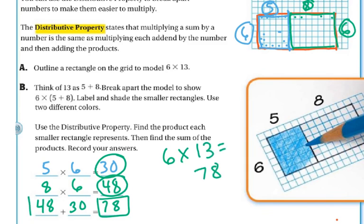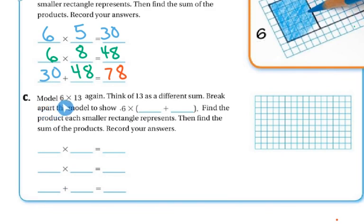And then if you had a hard time adding that, remember, you just have to make sure that you line them up. So I just kind of did it in my head. But 8 plus 0 is 8, 4 plus 3 is 7. All right, so next, they want us to model 6 times 13 again. But this time, they want you to think of 13 as a different sum. So break apart the model to show it. So for example, so first, I'm going to draw. It's the same thing. I've got my 6 on this side. And over here in the big area, I've got my 13. But I want to break it up into something that's easier.